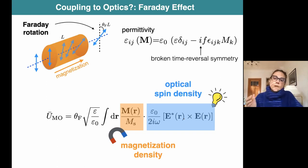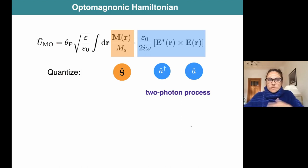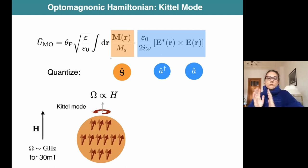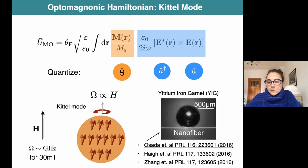This E-star cross E is simply - if I consider, for example, circularly polarized light - a vector pointing perpendicular to the plane of polarization. We can proceed phenomenologically to quantize these interaction terms. From the quadratic part in the electric fields, we obtain two-photon operators or two-photon processes, and from the magnetization we get spin operators. We are interested in coupling to the excitations of the fluctuations of the magnetization - coupling to magnon modes. The simplest mode to consider is the Kittel mode where all spins precess in phase. The frequency of these modes is usually in the gigahertz regime. How this can be implemented in a cavity setup was introduced in seminal experiments in 2016.